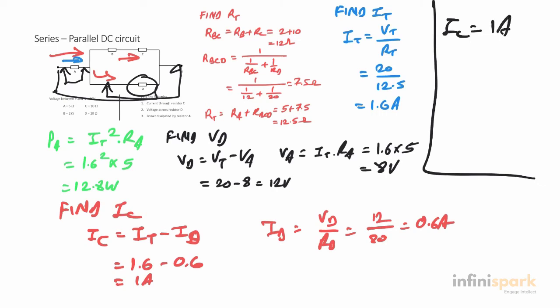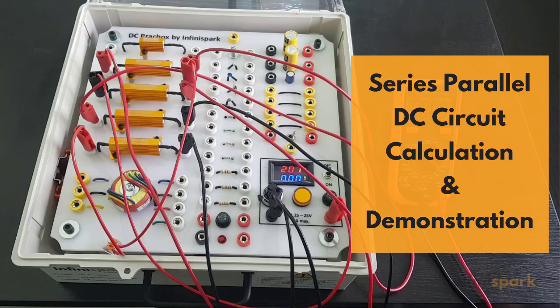IC is 1 amp, VD is 12 volts, and PA is 12.8 watts. I hope all of this made sense. If you found this video useful, please like it and share it with others who might benefit. Also, subscribe to this channel for regular updates. Thanks for watching.